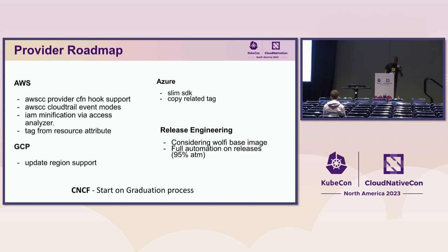I wanted to look at the provider roadmap. Generally with Custodian, all the providers have had at least 75 pull requests in the last year. A lot of it is just keeping up with the capability set emerging from the cloud providers.